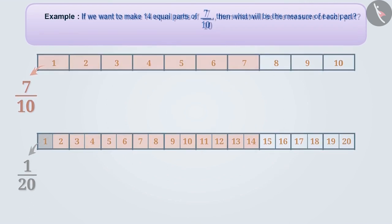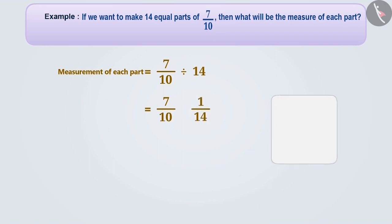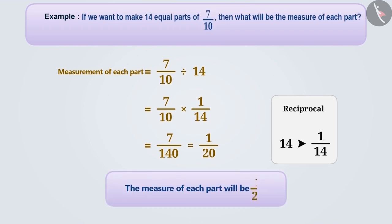Let's solve this mathematically. To find the measurement of each part, we have to divide 7 by 10 by 14. To solve this, we will keep the first fraction exactly the same and multiply it by the second number's reciprocal. Here, the reciprocal of 14 is 1 by 14. Therefore, if we want to make 14 parts of 7 by 10, then the measurement of each will be 1 by 20.